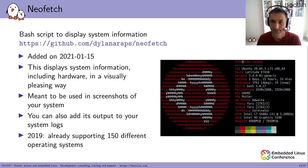The next one is a completely different one — it's called Neofetch. It's a bash script to display system information including hardware in a visually pleasing way. It's meant to be used in screenshots of your system. You can also add its output to your system logs. Back in 2019, it was already supported in 150 different operating systems.